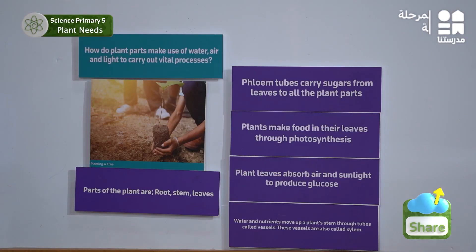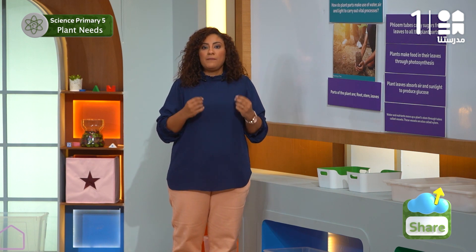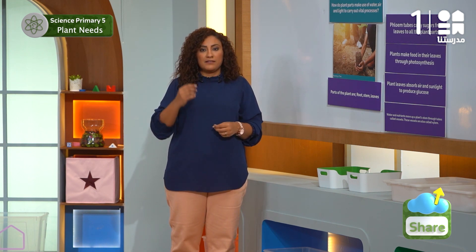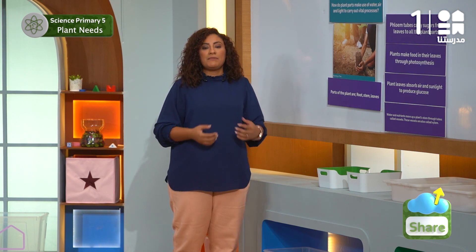Our last evidence is that phloem tubes carry sugar from leaves to all the plant parts. To explain how leaves of plants can transform light energy from sunlight to chemical energy.